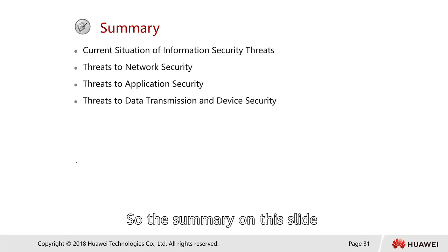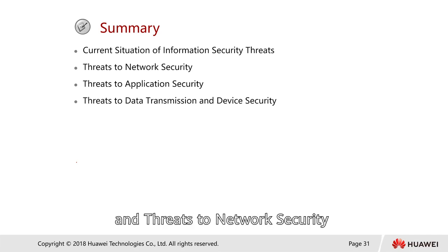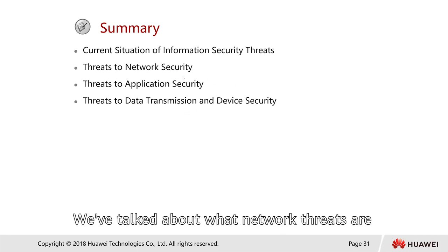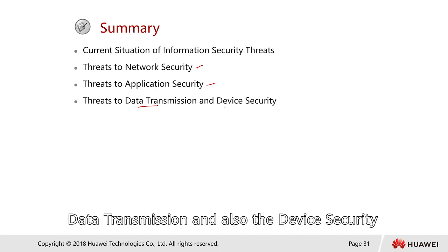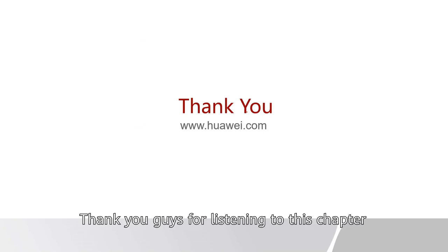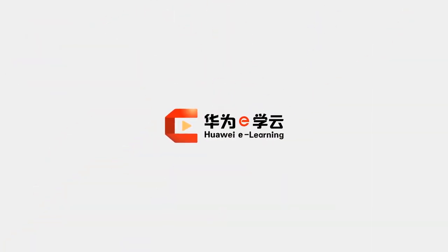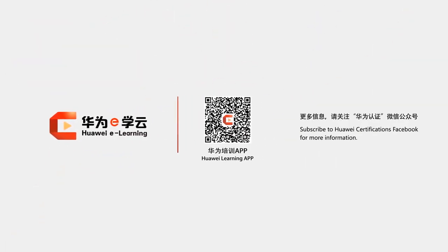In summary, this chapter covered the current situation of information security threats, threats to network security, application security threats, data transmission threats, and device security. Thank you for listening to this chapter.